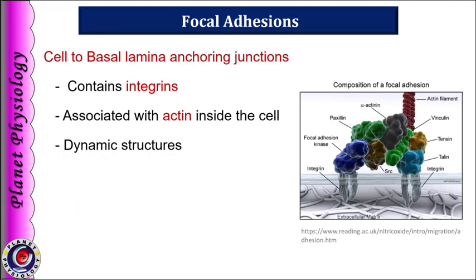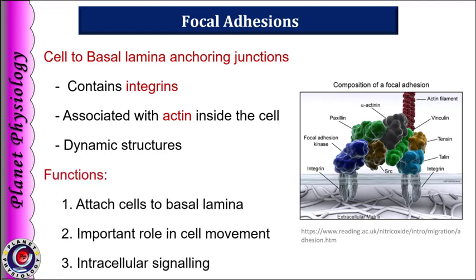The last adhesive junction is focal adhesion. These are local attachments between the cell and extracellular matrix, involving integrins attached to actin filaments within the cell and collagen and other filamentous structures in the extracellular matrix. Focal adhesions are dynamic structures showing frequent formation and disruption, and are mainly associated with migratory cells — for example, margination and chemotaxis of WBCs in response to tissue damage. They also play an important role in initiating signaling cascades according to conditions of the extracellular matrix.